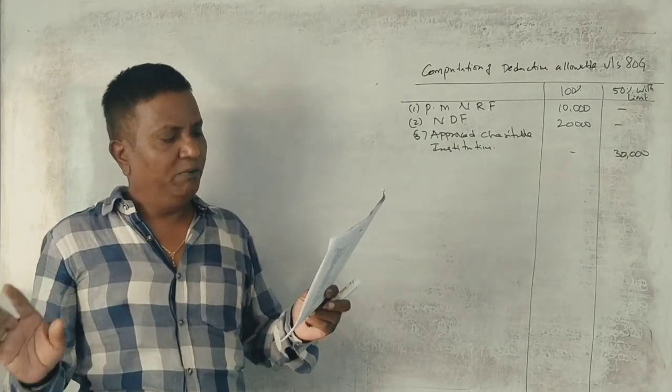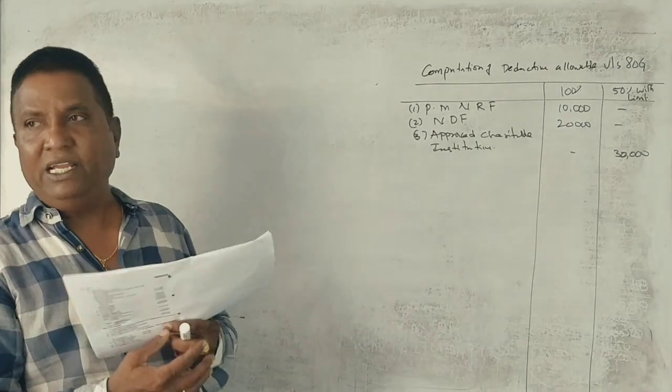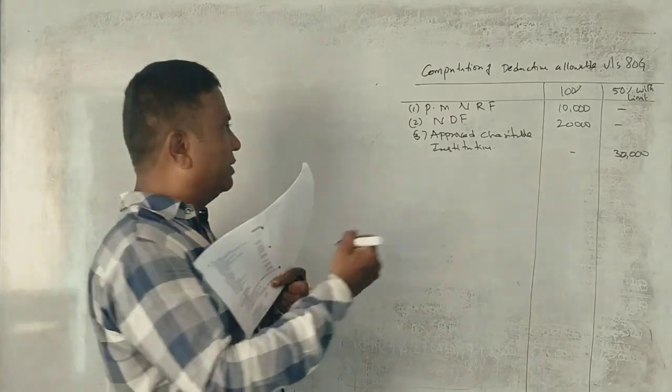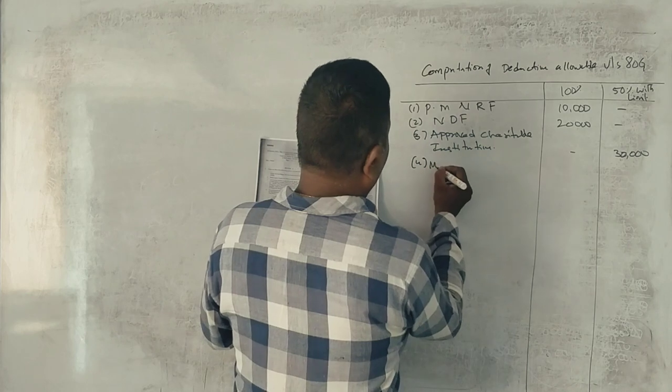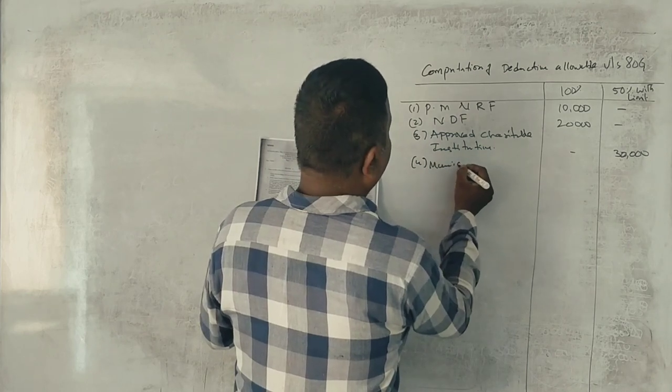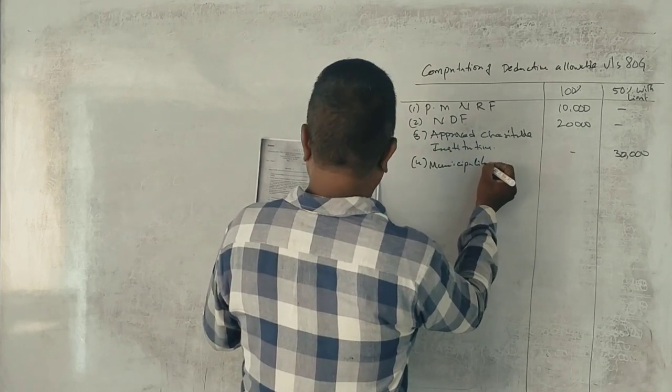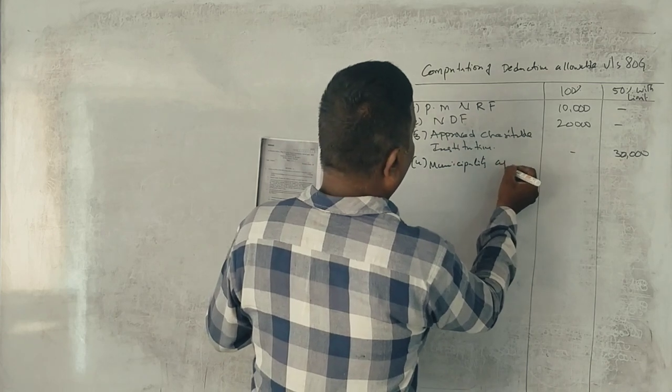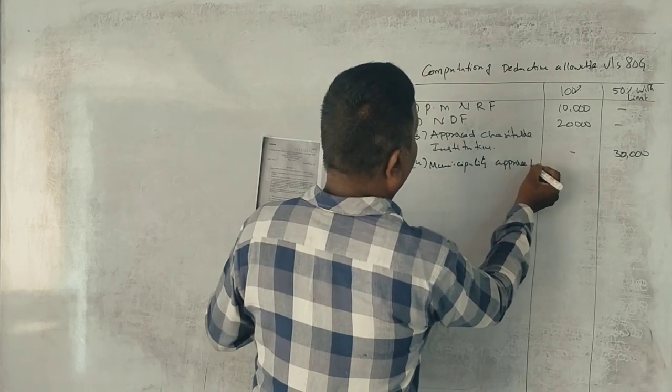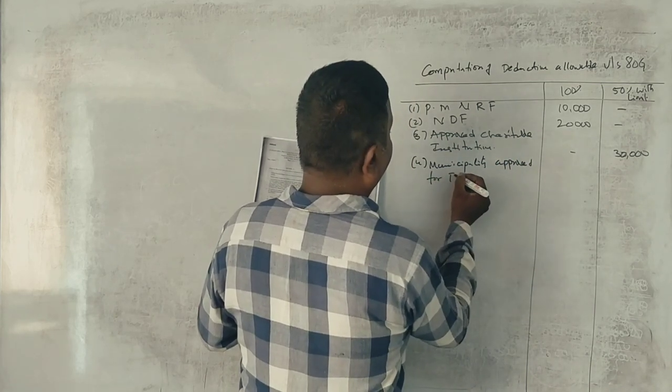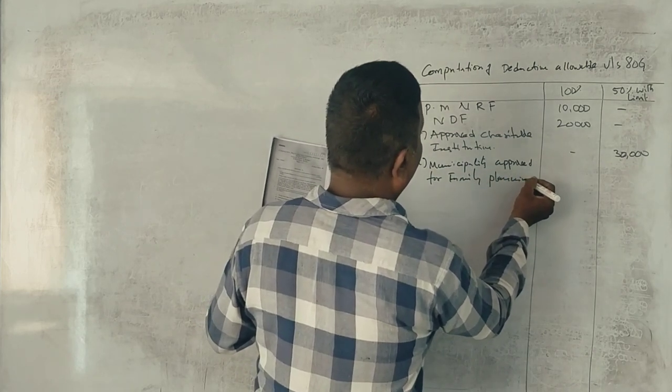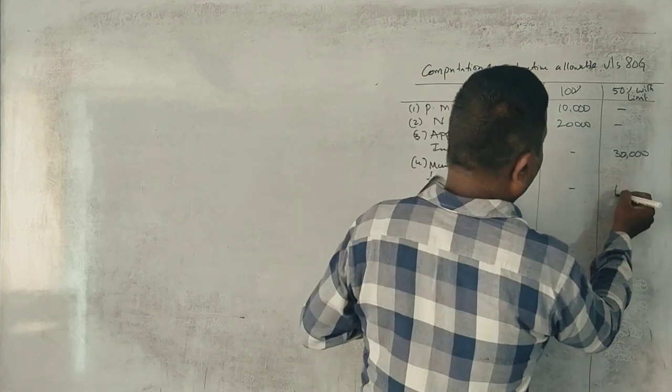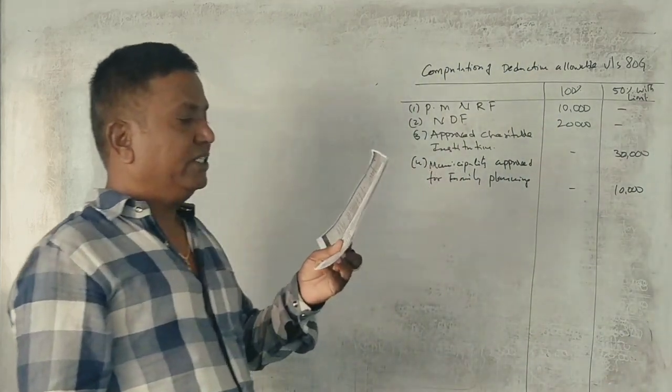Next, municipality approved for promoting family planning, 50% applies, correct? Municipality approved for family planning, 10,000 rupees, 50%.